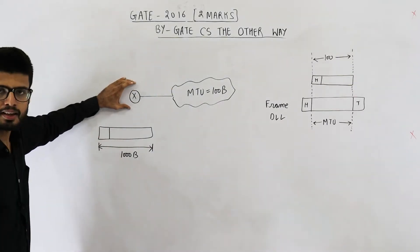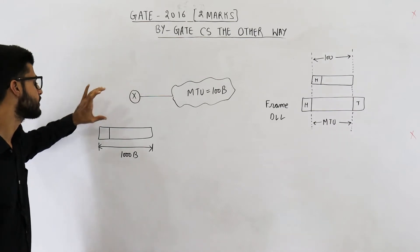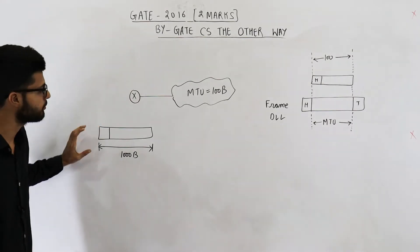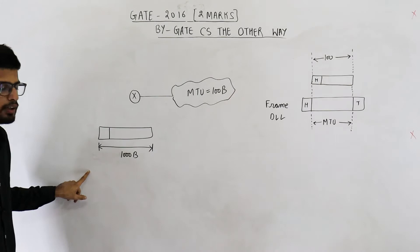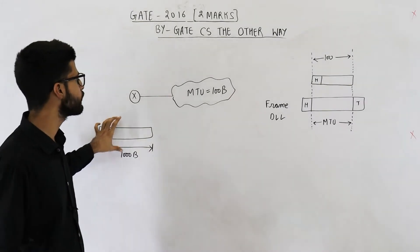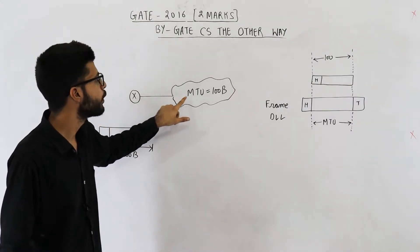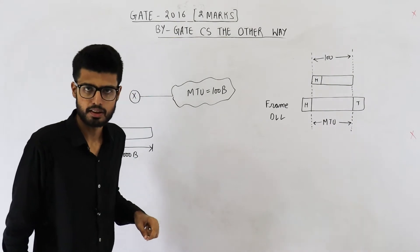There is some router and this router receives an IP datagram of 1000 bytes. This datagram needs to be forwarded on a link with MTU equal to 100 bytes.